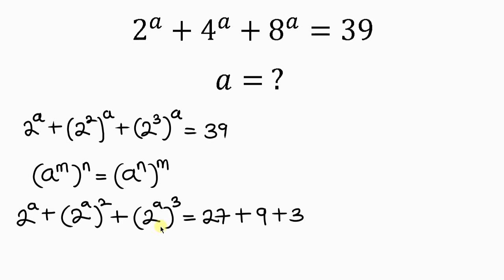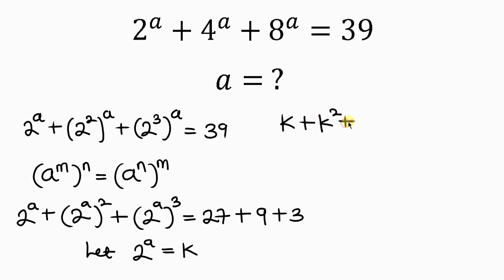Notice that the left-hand side has 2 to the a, 2 to the a, 2 to the a. So we have to introduce substitution. Let 2 to the a be equal to k. So the left-hand side can now be written as k, plus this becomes k squared, plus this becomes k cubed, equal to — now let's write the right-hand side: 27 is a perfect cube which means 3 cubed, plus 9 is the perfect square which means 3 squared, plus 3.